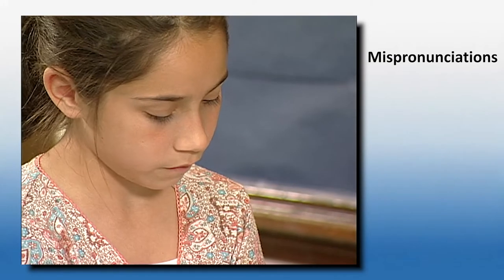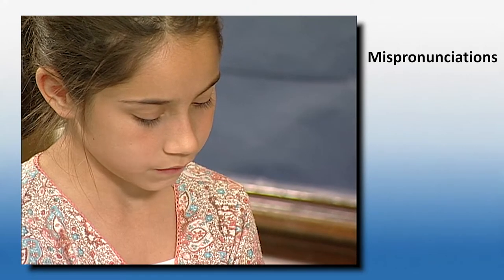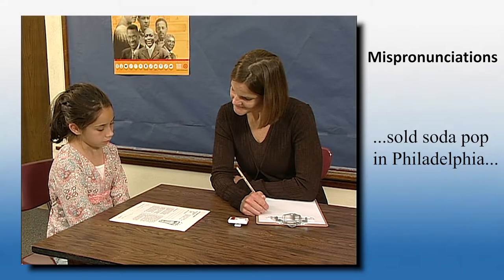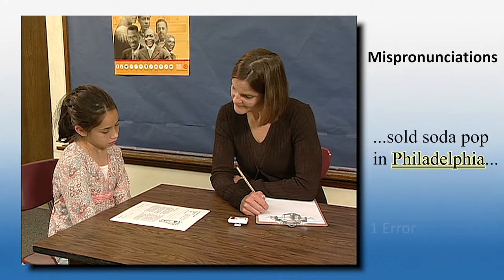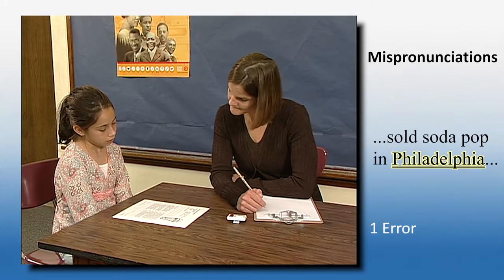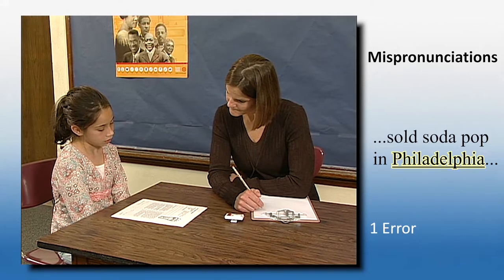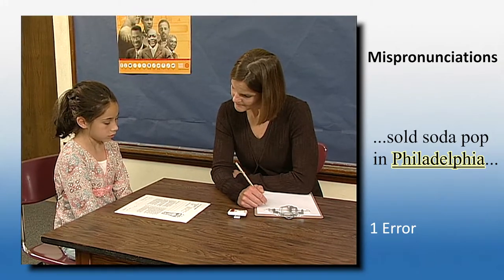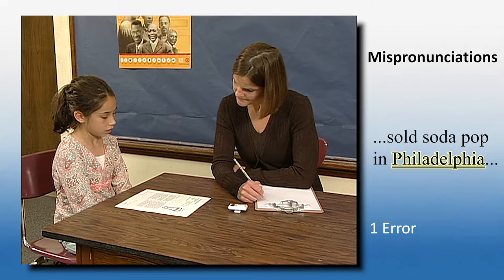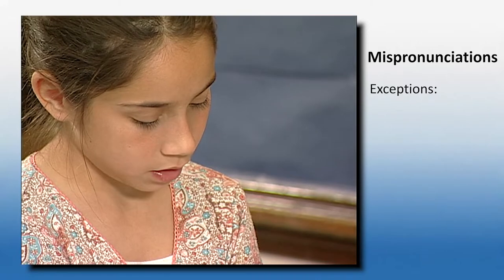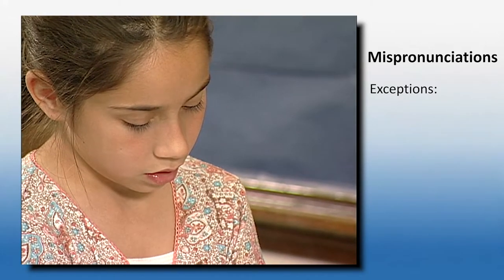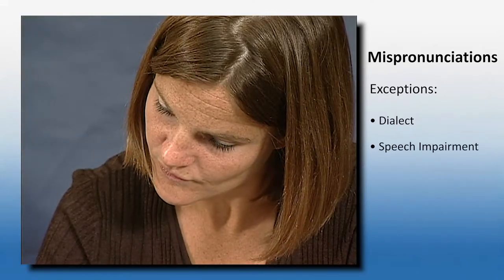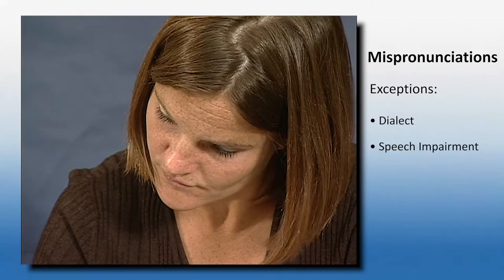For example, the guidelines recommend counting each mispronunciation of a name or proper noun as an error. [Student mispronounces "Philadelphia"; teacher corrects: "Philadelphia."] Having this rule reduces judgment calls about whether the student's pronunciation is close enough to count the word as correct. Following this guideline yields more consistent scores. An exception to the mispronunciation rule occurs if a student mispronounces a word because of dialect or a speech impairment. In these cases, you typically wouldn't count the mispronunciation as an error.